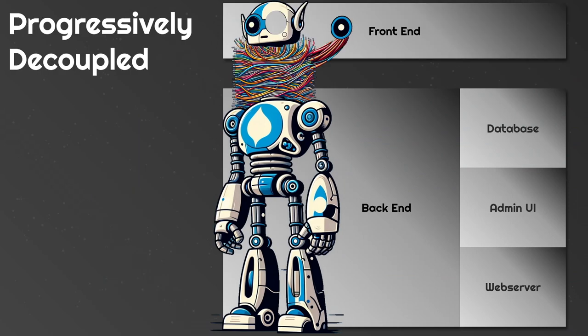Then we have progressively decoupled, which combines both approaches. The majority of the head is still being served in a coupled fashion, and you're just picking parts and pieces to bundle up separately. For example, you've taken an eye out and have a nice clean bundle of wires going to a new eye, while the rest still works in the traditional way. This lets you pick the parts that matter to you and invest in making them special, while the rest of the site works out of the box.